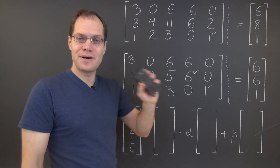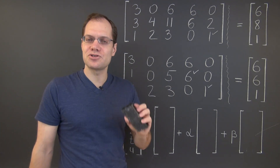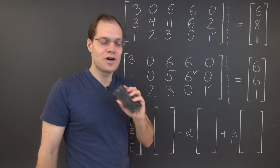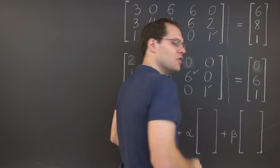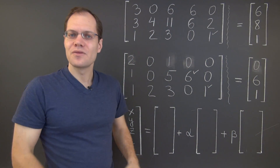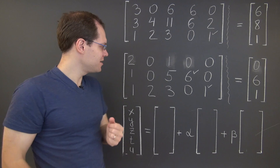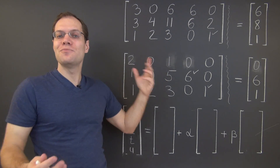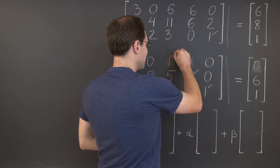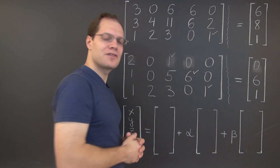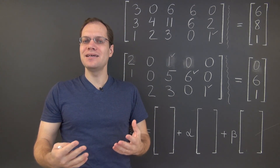That is accomplished by subtracting row 2 from row 1. Now I will use my eraser to accomplish the goal — subtracting row 2 from row 1. Our next pivot is the 1 here, and our unorthodox Gaussian elimination is complete.